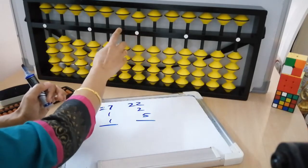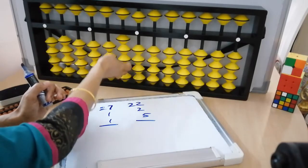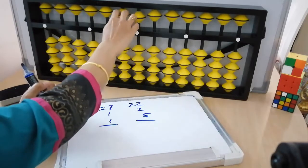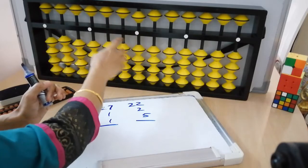This is tenth place. Every beat is 10, 10, 10. It is 50. In the last class, let's put it together and do it.